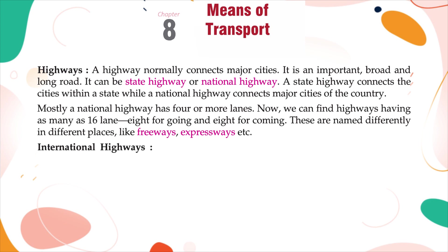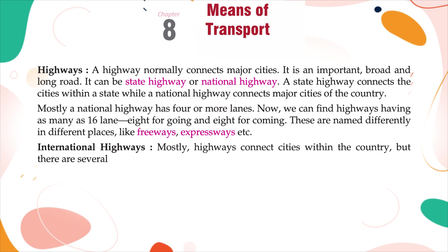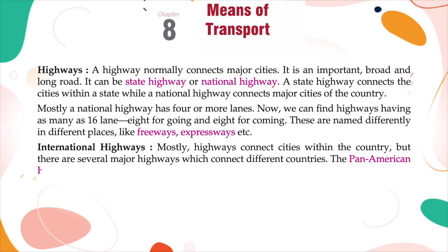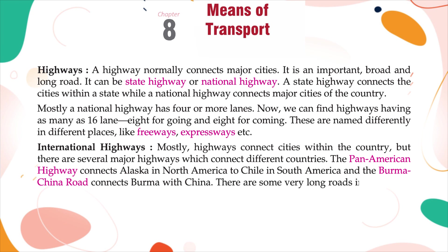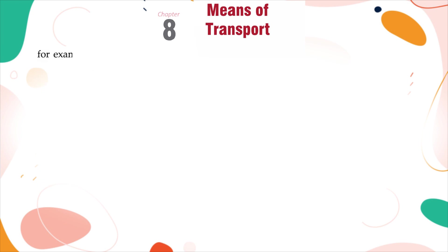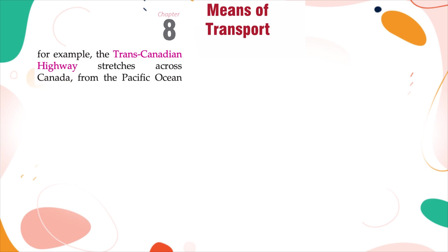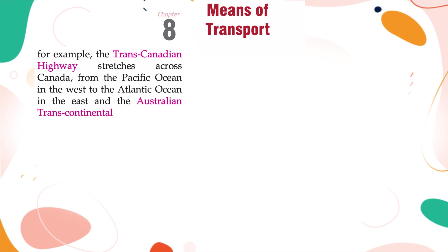International Highways: Mostly, highways connect cities within the country, but there are several major highways which connect different countries. The Pan-American Highway connects Alaska in North America to Chile in South America, and the Burma-China Road connects Burma and China. There are some very long roads in the world. For example, the Trans-Canadian Highway stretches across Canada from the Pacific Ocean in the west to the Atlantic Ocean in the east, and the Australian Trans-Continental Highway connects north of Australia to the south.